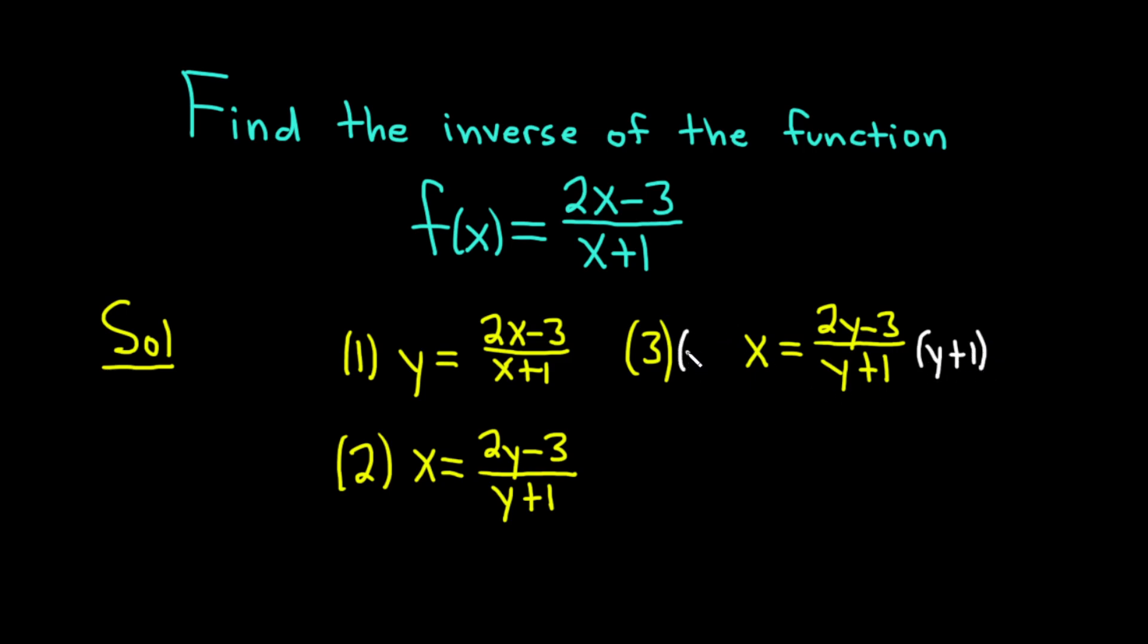We have y plus 1 and over here we have y plus 1. These cancel. So we end up with y plus 1 times x. So (y + 1)x equals, and then over here we just have 2y minus 3.